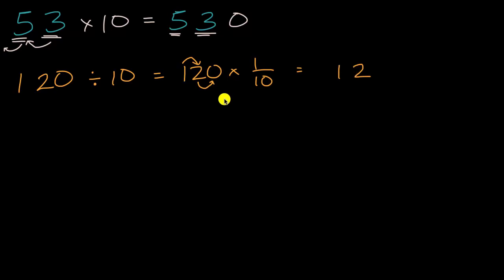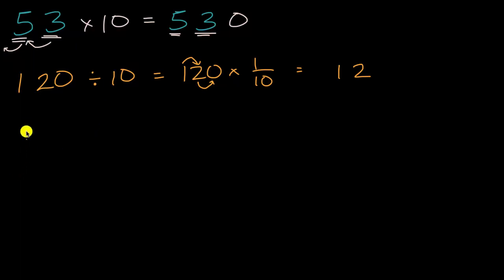So that was all review, but now we're going to extend this a little bit by thinking about things that have place values representing less than one — we're going to deal with decimals. So just to get ourselves warmed up, let's see if we can figure out what 3.015 times 10 is.